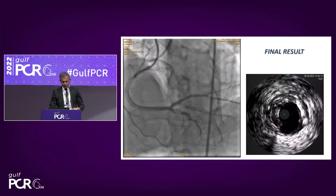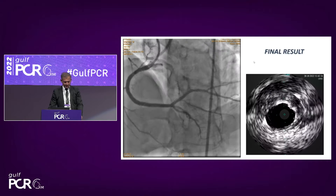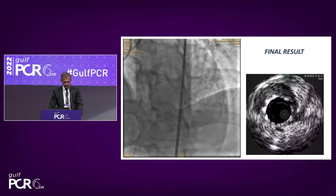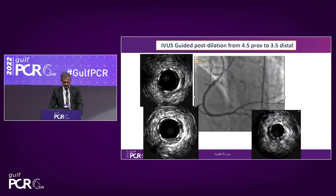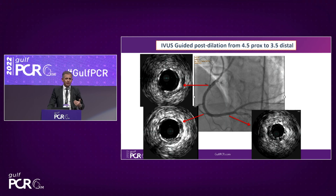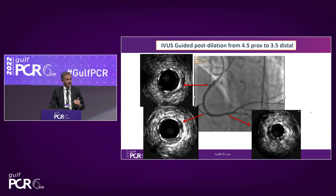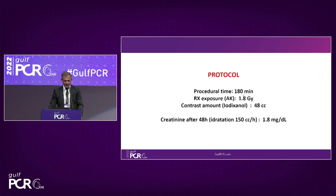After stenting with post-dilatation, the final IVUS pullback shows the result. At the distality, the vessel is not perfectly circular — we have a sub-intimal part — so we cannot aim for maximum expansion due to risk of perforation. When stenting in sub-intimal space, we don't want 100% expansion. In the proximal and mid segments, the result is perfect.